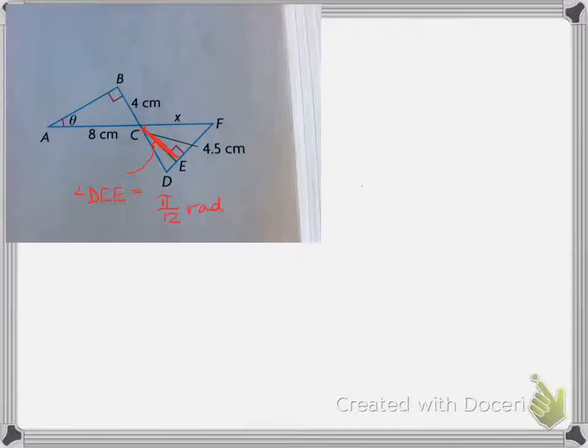All right, and again, it's pi over 12 radians because anything that's measured with pi implies that it's in radian form. Now, let's look at trying to solve for theta. We know using, in a right angle triangle, using SOHCAHTOA, we can find the value of theta.